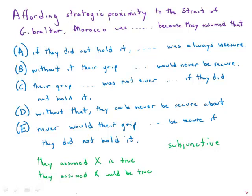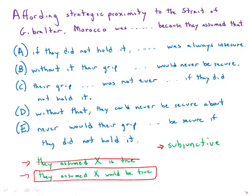Here we need to know a little about the subjunctive mood, which is used for conditionals. If we're choosing between 'they assumed X is true' and 'they assumed X would be true,' the first is incorrect — it does not use the subjunctive. The second is correct, properly using the subjunctive to form a conditional.